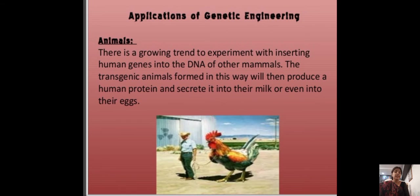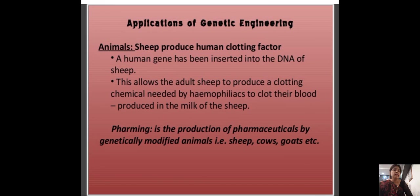Application of genetic engineering in animals: there is a growing trend to experiment with inserting human genes into the DNA of other animals. The transgenic animals formed in this way will produce a human protein and secrete it into their milk or even into their eggs. For example, a human gene has been inserted into the DNA of sheep, allowing the adult sheep to produce a clotting chemical needed by hemophiliacs to clot their blood, produced in the milk of the sheep.